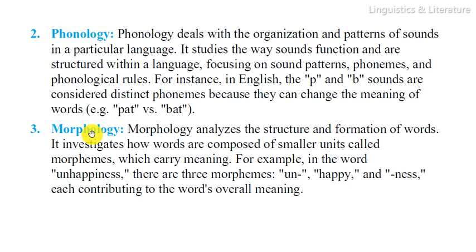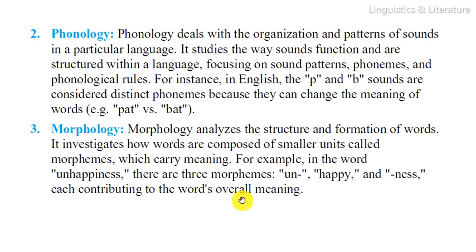Morphology analyzes the structure and formation of words. It investigates how words are composed of smaller units called morphemes, which carry meaning. For example, in the word 'unhappiness' there are three morphemes: 'un', 'happy', and 'ness', and each morpheme contributes to the word's overall meaning.